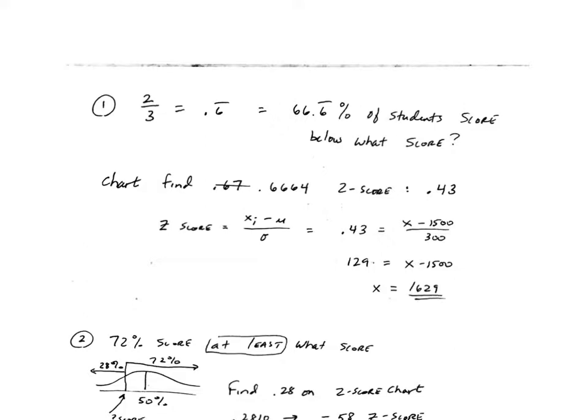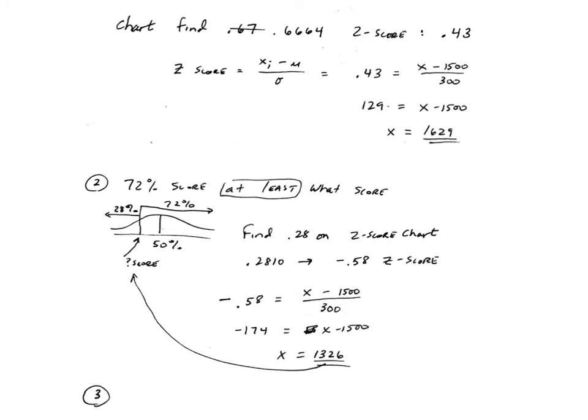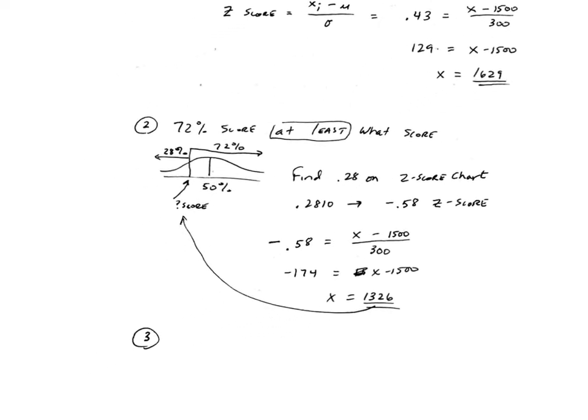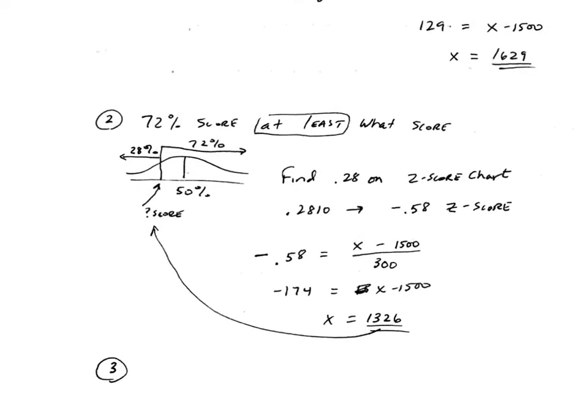For the second problem I said 72 percent of students will end up with a score of at least what value. The part that confuses students is 72 percent score at least what score means 72 percent of the students score that score or better. Since our z-score chart shows the percent of data that's less than a particular z-score, we have to actually look for 28 percent on that chart.